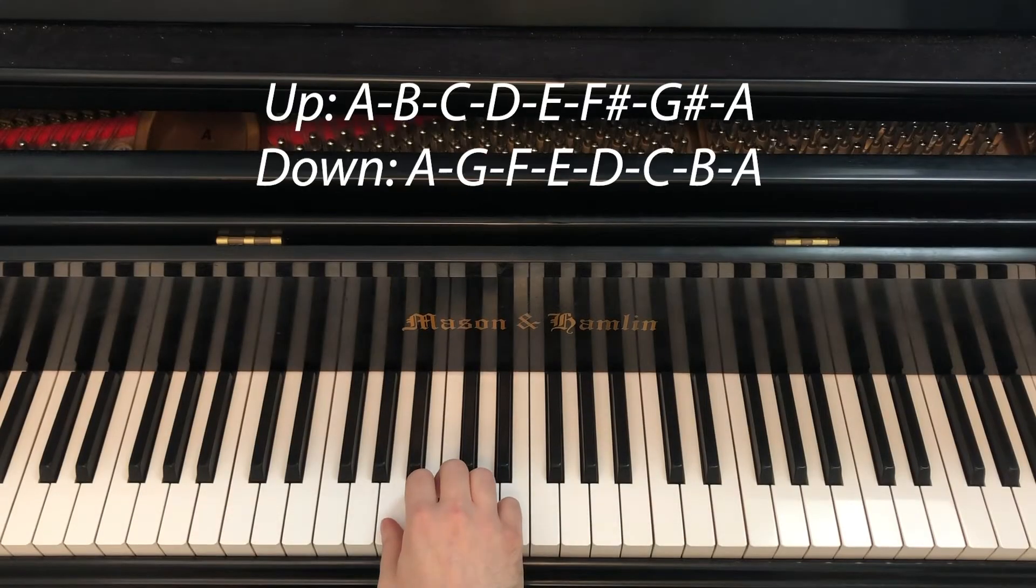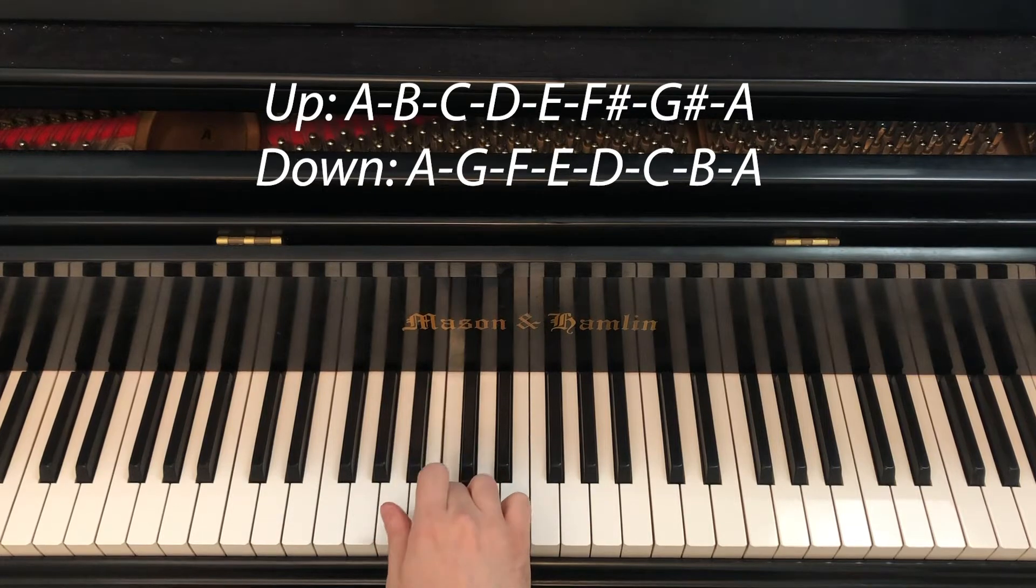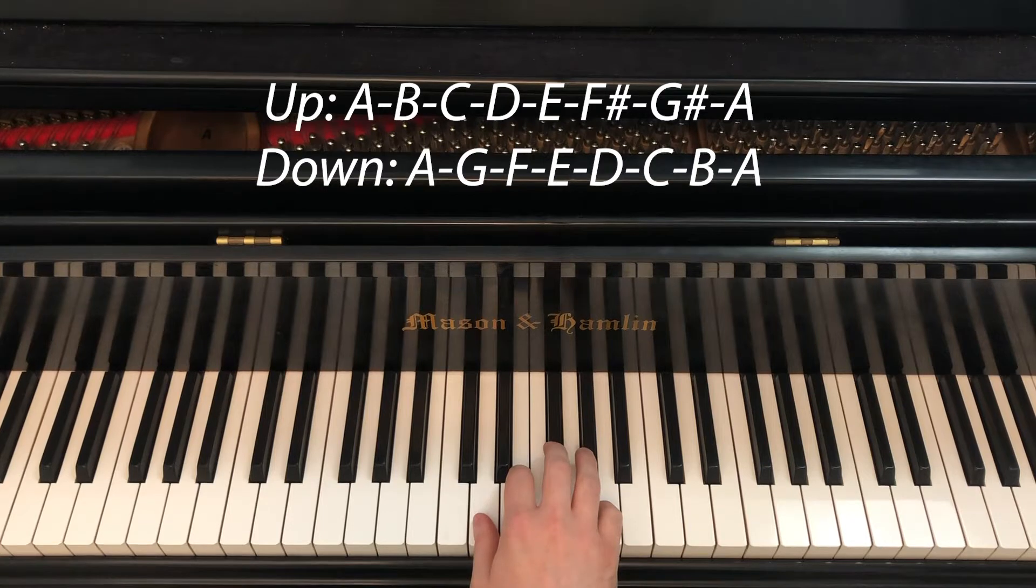A melodic minor in the right hand begins with a thumb on A and we have 1 2 3 on A B C. Following this we'll have 1 2 3 4 on D. We have D E F sharp G sharp, white white black black.